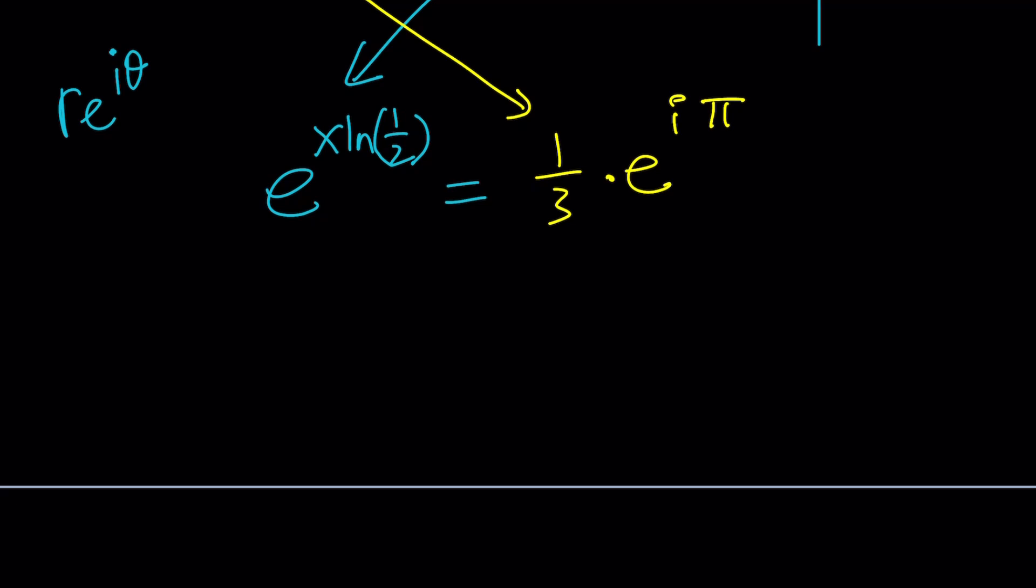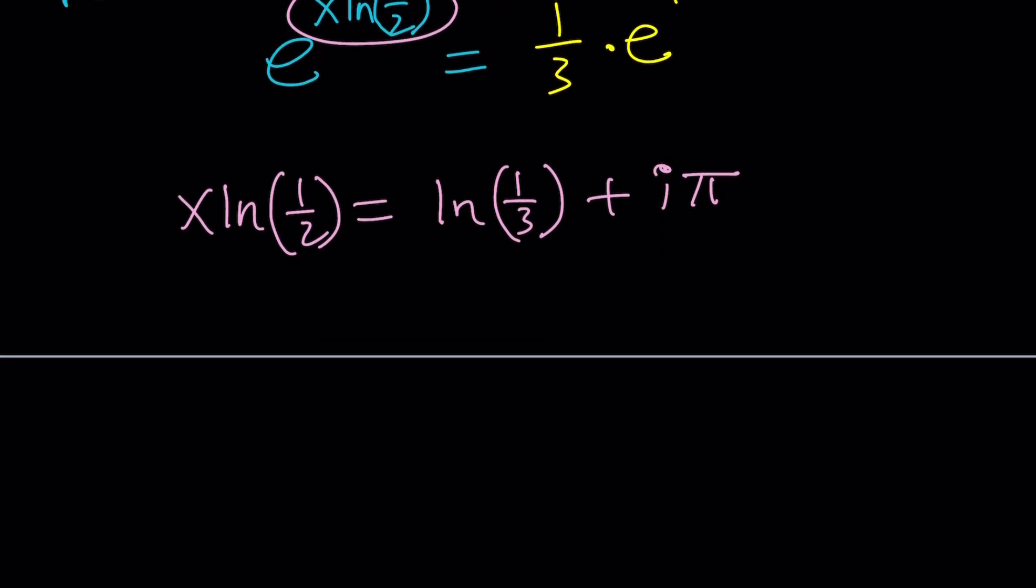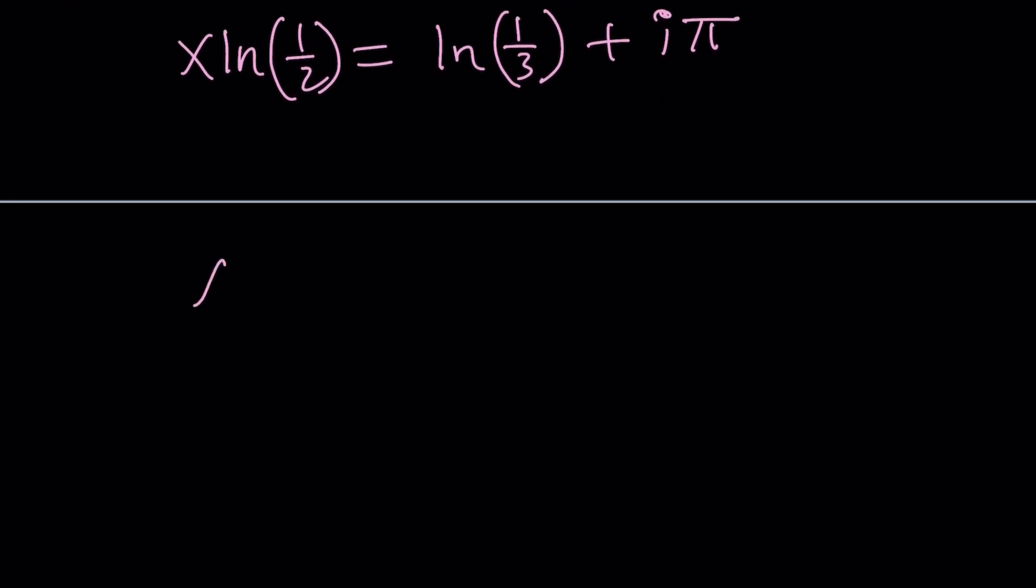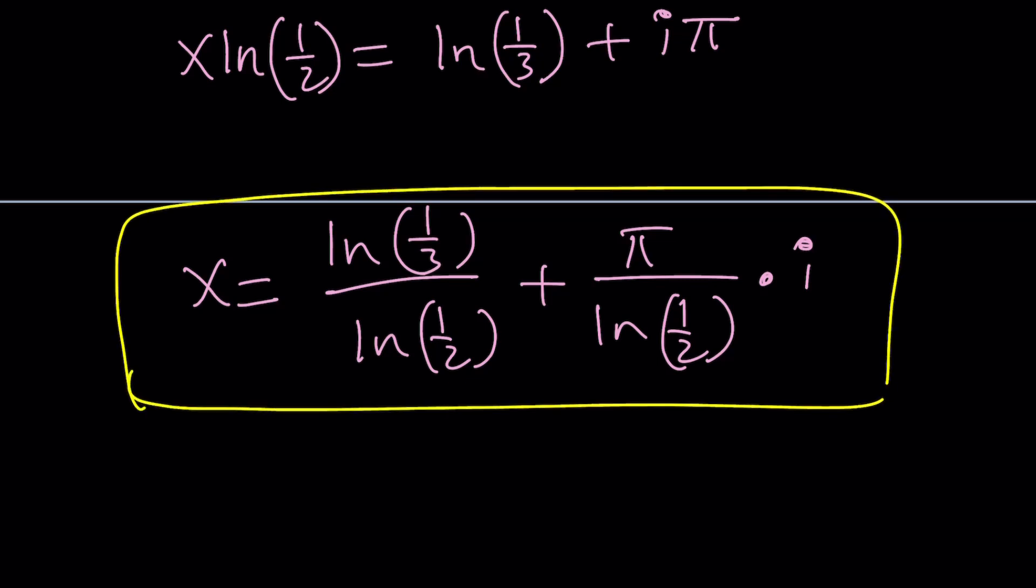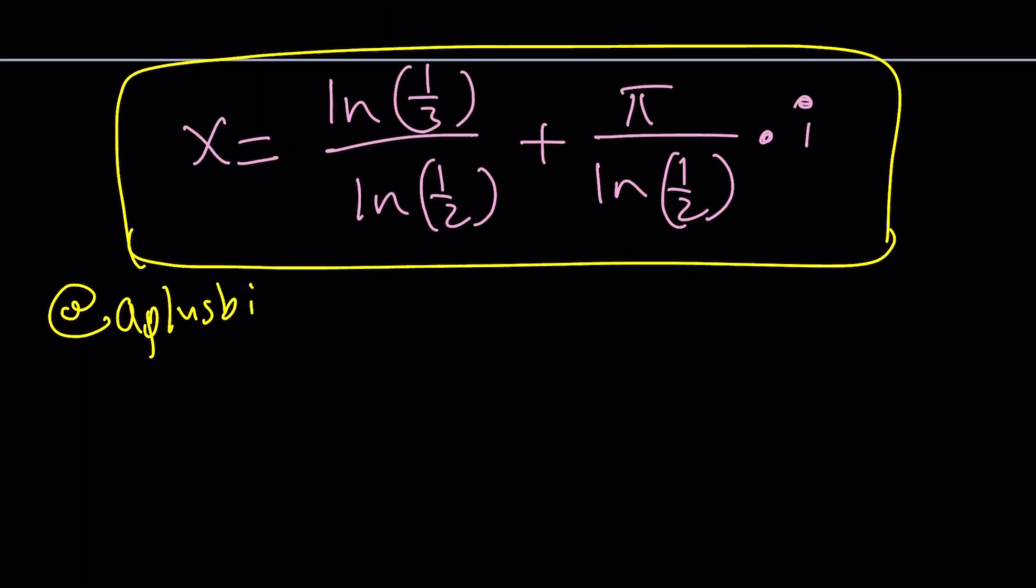Now, ln both sides. This is going to bring down the exponent and it's going to be ln of 1 third plus i pi. I'm going to divide both sides by ln 1 half. So x is going to be ln 1 third plus ln 1 half plus pi divided by ln 1 half times i. This is a complex number in standard form, which is a plus bi. By the way, I have another channel where I do a lot of complex problems. That's a complex solution, and that brings us to the end of this video.